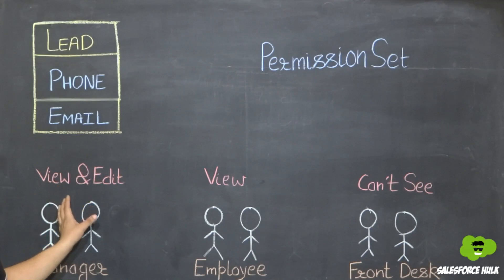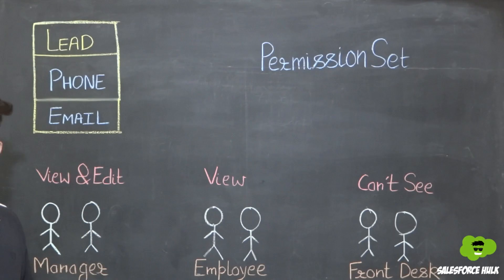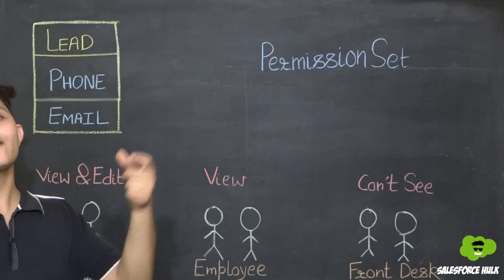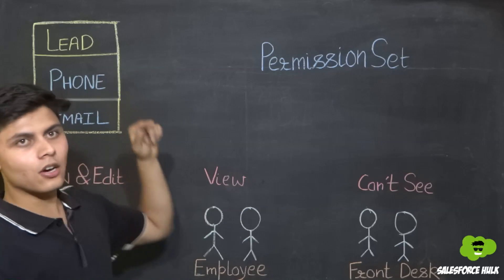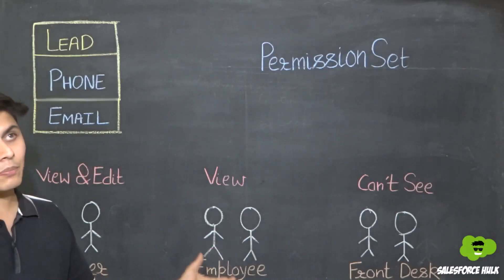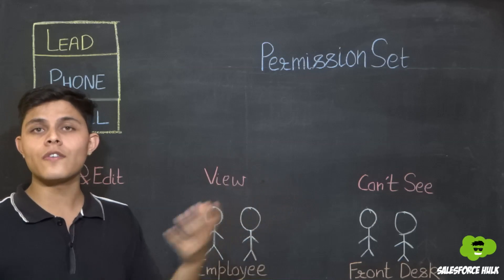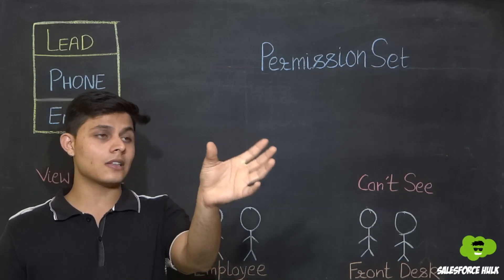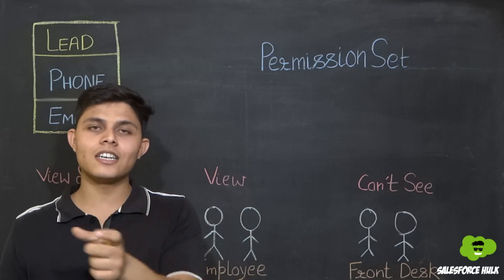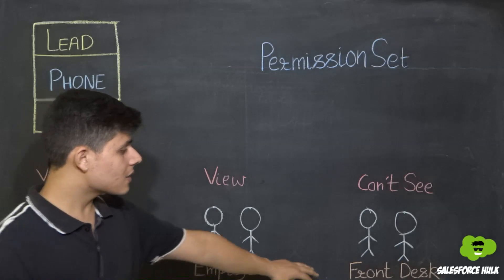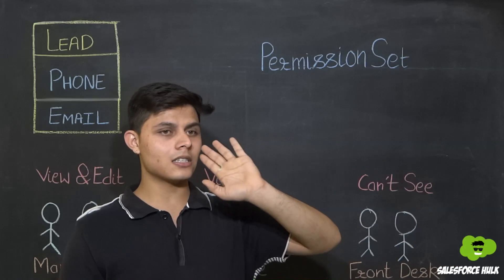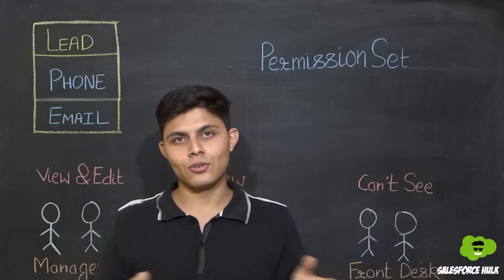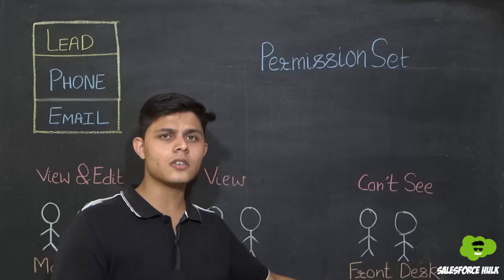For the Manager profile, we want to give full access — they can view the field and edit the field value on records they have access to. For the Employee profile, we only want them to have read access on the Phone and Email fields — they cannot edit these fields, only the Manager can. Employees can only see the field values. For the Front Desk profile, we do not want to give any access — they should not view these fields at all.